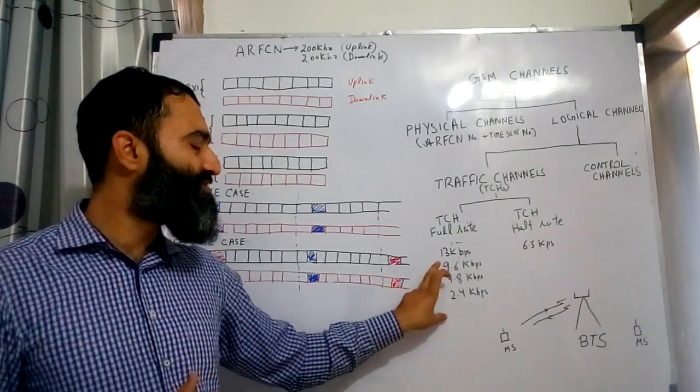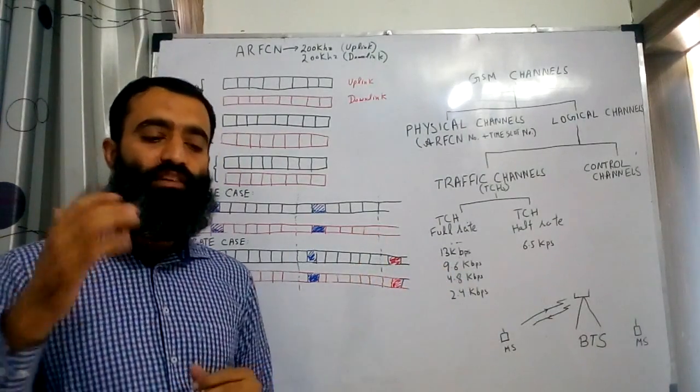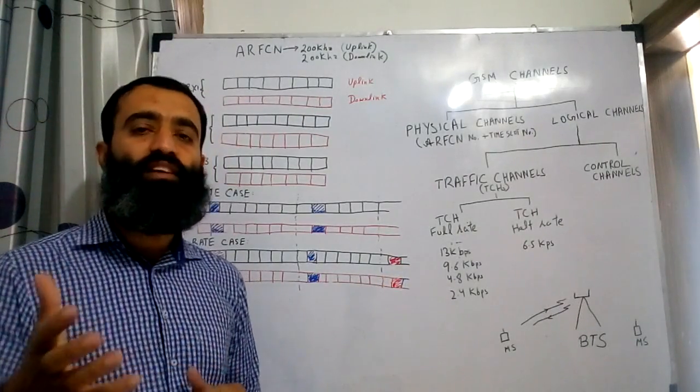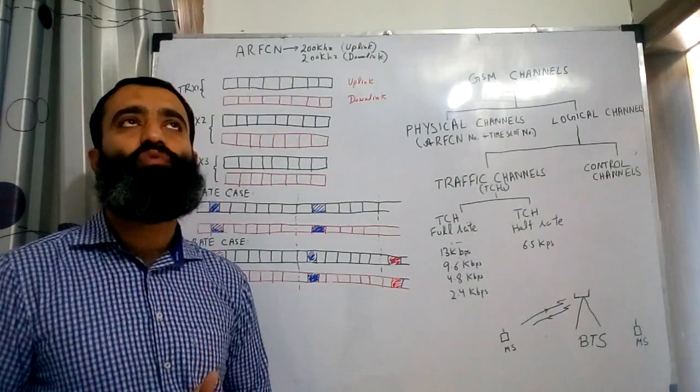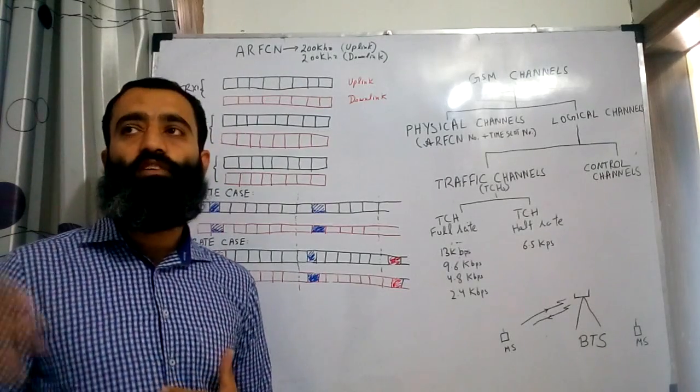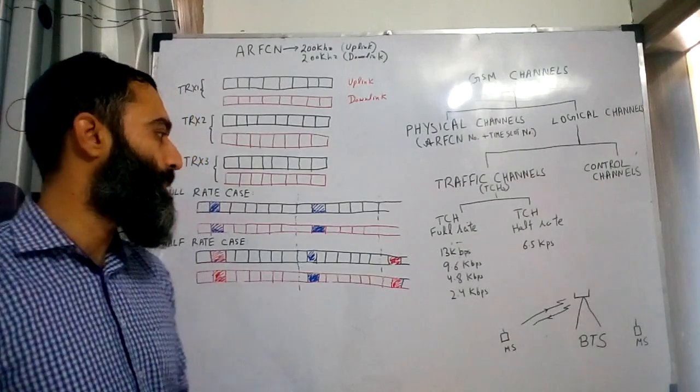But now these data channels which are used to carry the internet data are not very important, because we have GPRS and edge in which we use a different methodology. We will come to that later on.